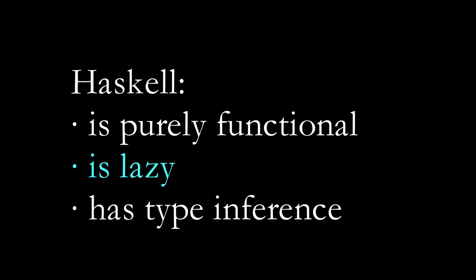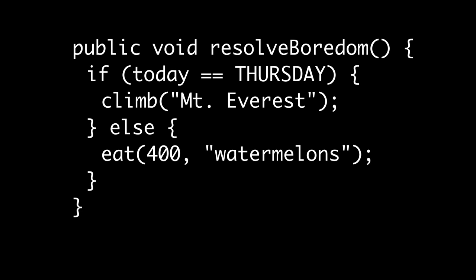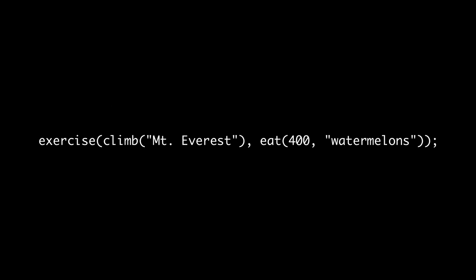Haskell is also lazy — it waits until the last minute to evaluate expressions. You've seen something similar in a more conventional language. Suppose the two functions, climb and eat, are extremely expensive — they take a long time. The function resolve boredom is a little bit lazy in that it only evaluates one or the other. A non-lazy language like C or Java first calls both climb and eat, then passes the results on to exercise. Haskell can avoid some of this work by waiting until an answer is needed. It is majestically lazy.